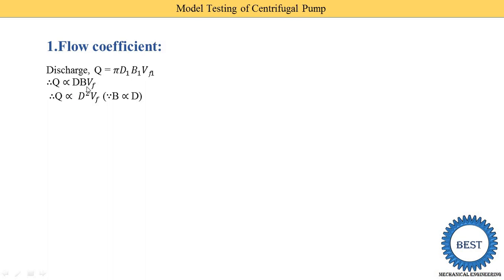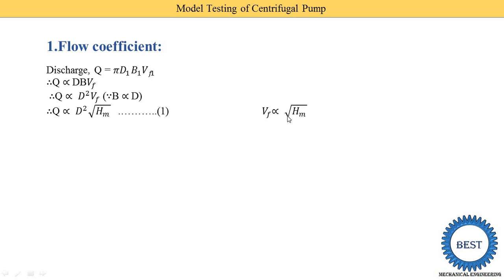Now the width B is proportional to the diameter, meaning the width of this impeller depends on the diameter. So B is replaced by D, giving D × D = D². So we get that Q is directly proportional to D² × VF. Now VF means velocity of flow, and velocity of flow depends on the manometric head, so VF = √(2g·HM). Since 2 and g are constants, VF depends on √HM. So in this equation, VF is replaced by √HM, and this is our equation number 1.